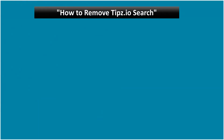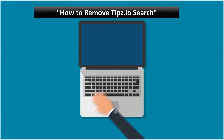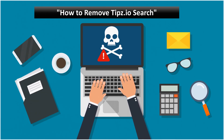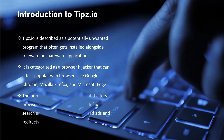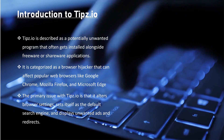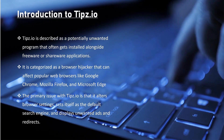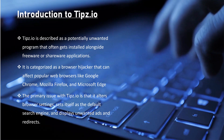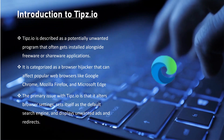How to remove tips.io's search. Tips.io is a potentially unwanted program that often gets installed alongside freeware or shareware applications. It is categorized as a browser hijacker that can affect popular web browsers like Google Chrome, Mozilla Firefox, and Microsoft Edge. The primary issue with tips.io is that it alters browser settings, sets itself as the default search engine, and displays unwanted ads and redirects.